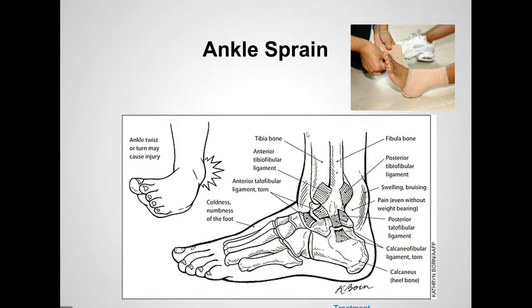This is an ankle sprain. A sprain can happen either on the inside or on the outside of your ankle. Typically, the outside sprains are the most common, and if you twist your ankle and cause this injury, there are a few ligaments that can become injured. One of the most common ones is the anterior talofibular ligament — you can see it's torn. That's a very common one, and it tends to cause instability and swelling around the ankle.